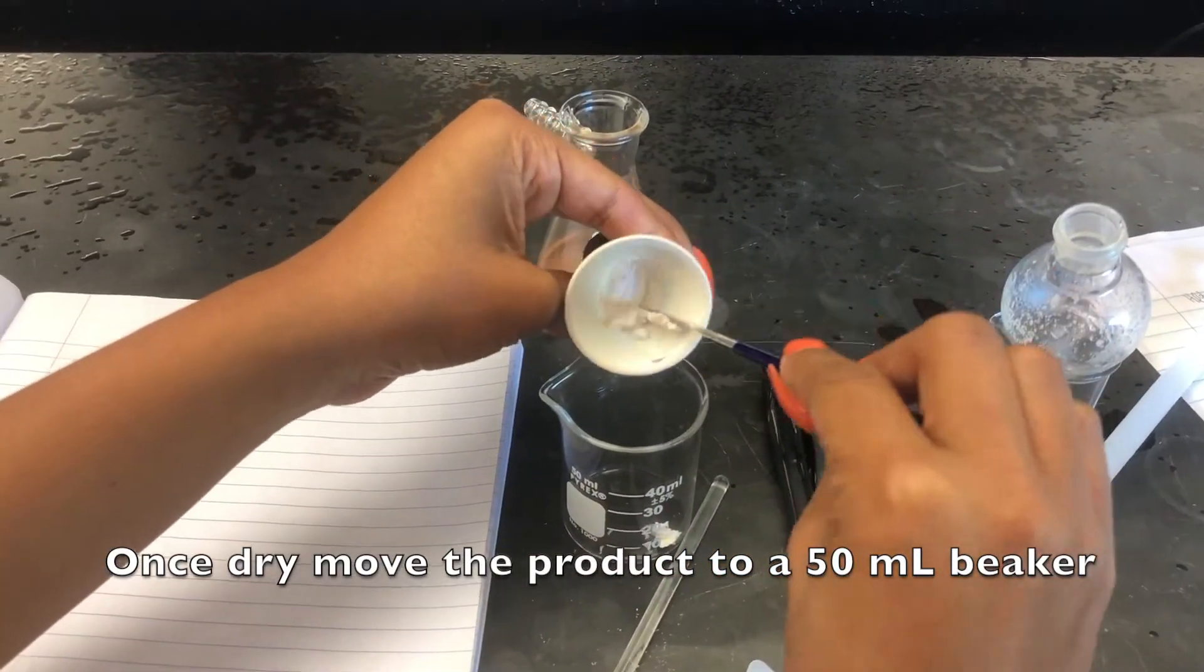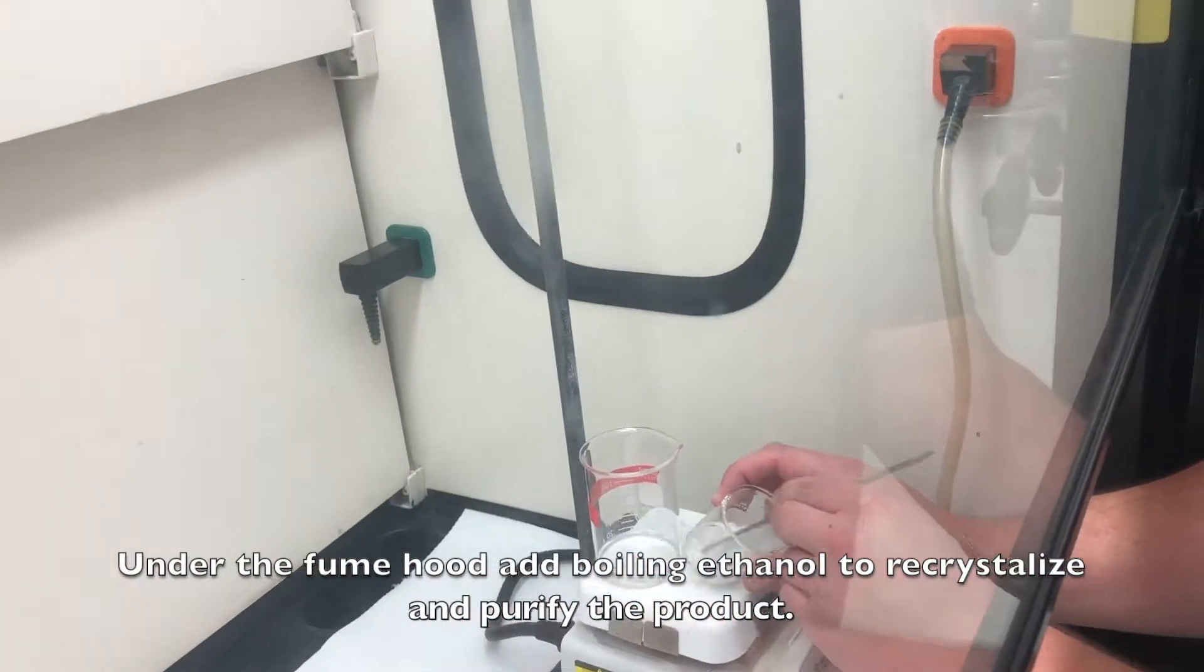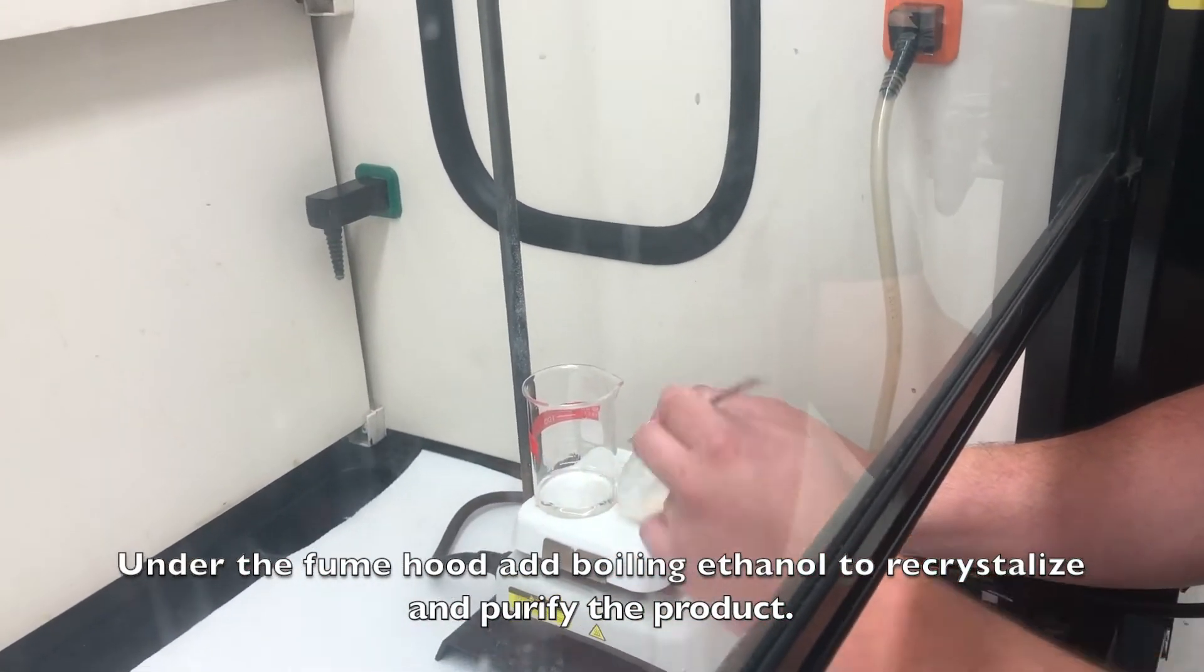Once dry, move the product into a 50 milliliter beaker. Under the fume hood, add boiling ethanol to recrystallize and purify the product.